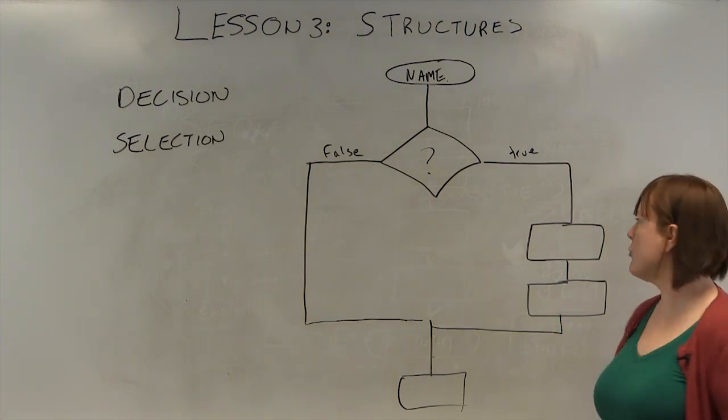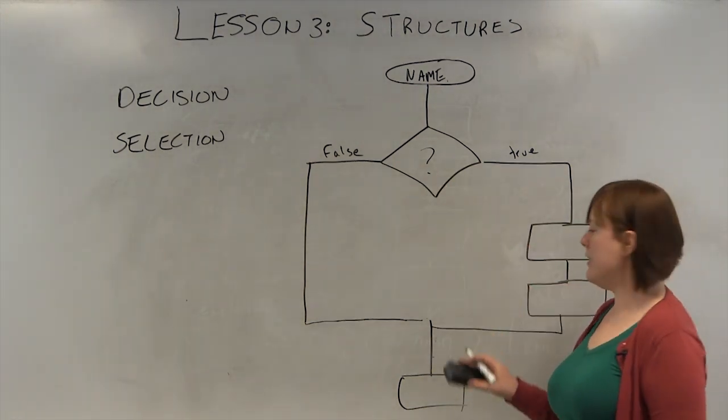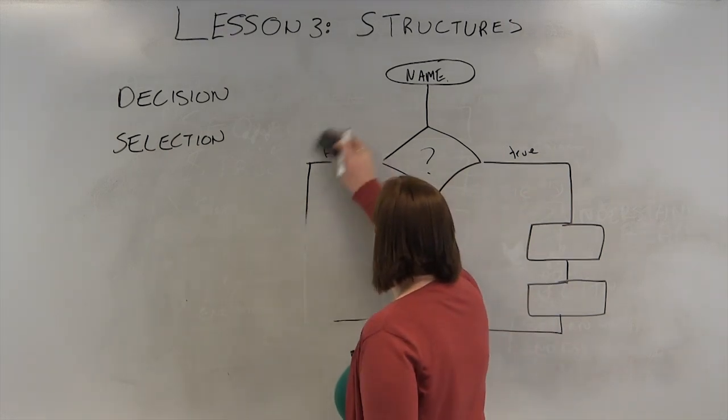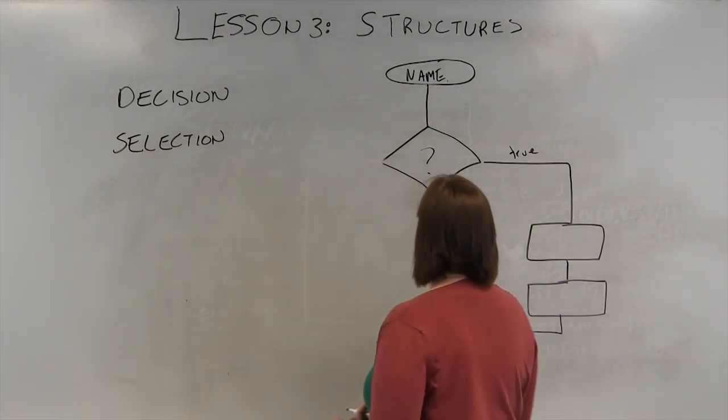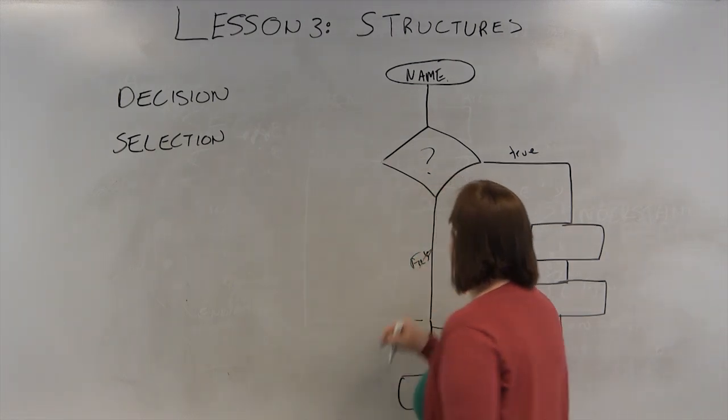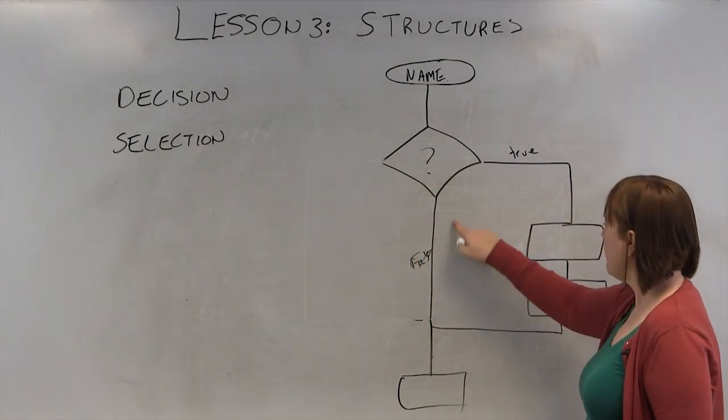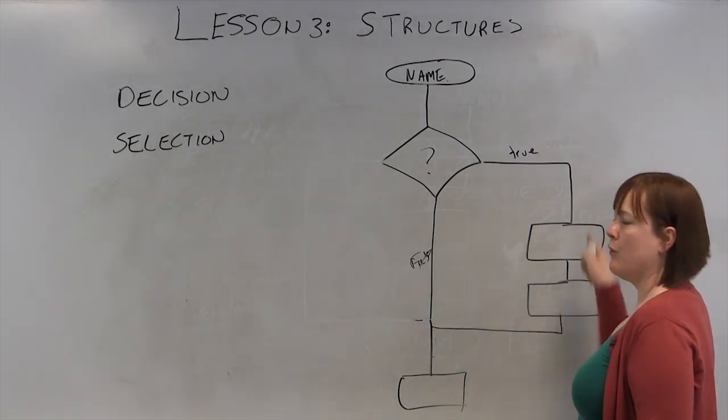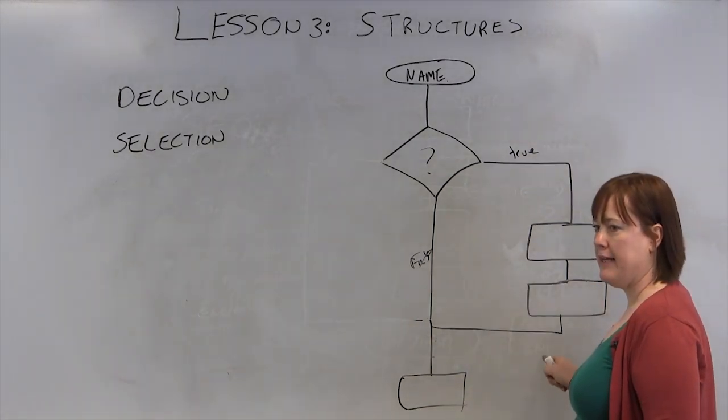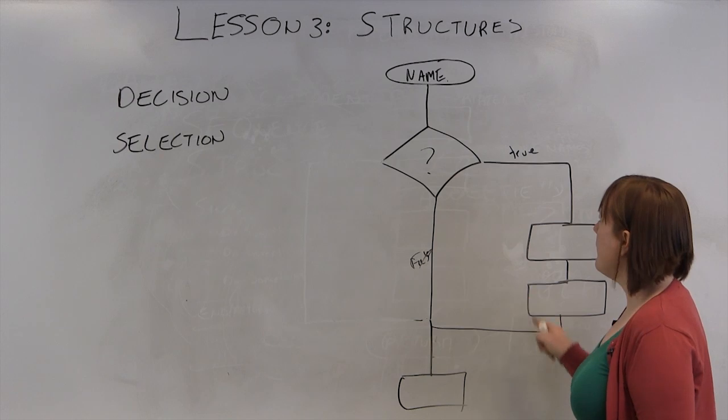Now there are two common ways of drawing this. You can draw it with two branches. Or you can draw it going directly down. Especially if nothing's happening, it's very common to just draw a straight line where it branches off to the side if something happens.